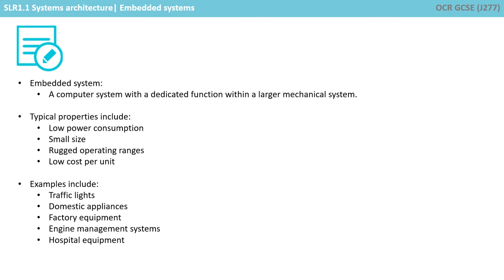Let's just recap what we've covered in this video. An embedded system is a computer system with a dedicated function within a larger mechanical system. Its typical properties include low power consumption, small size, rugged operating ranges, and low cost per unit. Typical examples include traffic lights, domestic appliances, factory equipment, engine management systems, and hospital equipment.